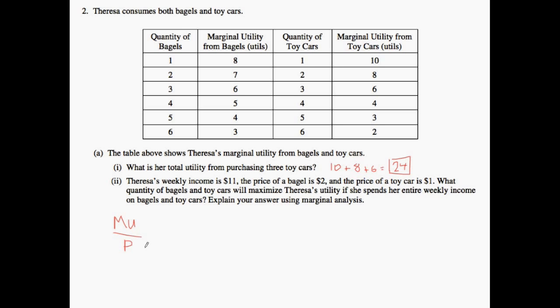The idea behind this is that essentially we need to find where the marginal utility of bagel over the price of a bagel equals the marginal utility of a toy car to the price of a toy car. In other words, the last dollar I spent on the bagel gives me as much utility in a proportion to the last dollar I spent on a toy car. That makes sense because we want to reach the point in which the last dollar I spent on one good is just as much utils or happiness that I got from the other good.